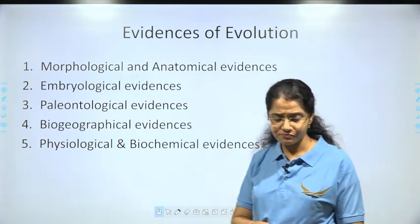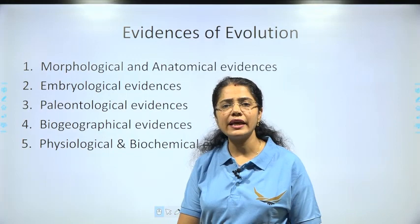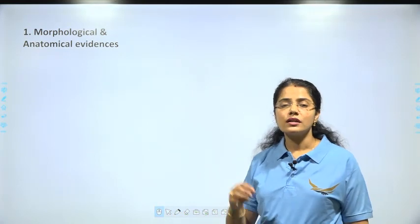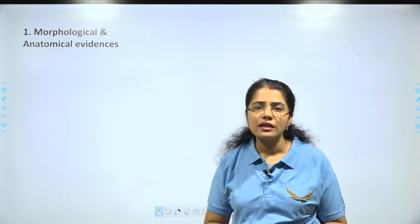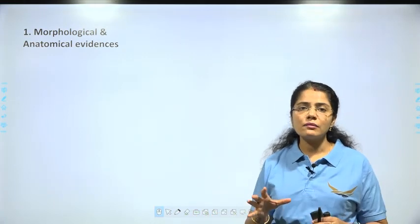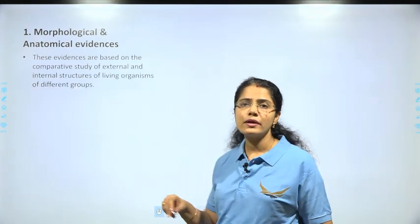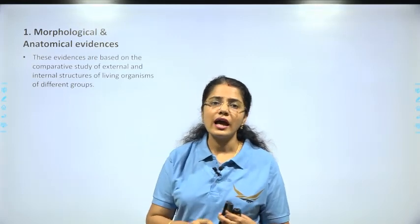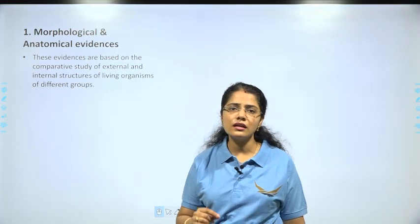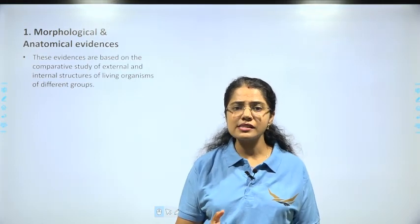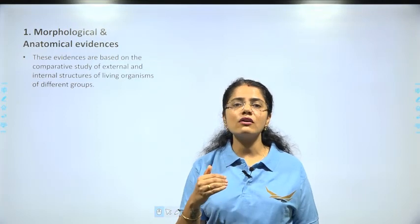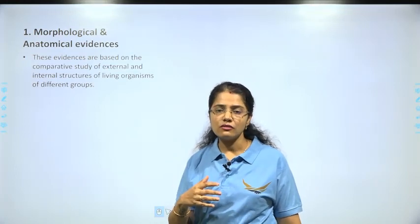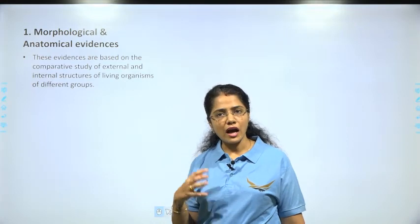We start with the first one: morphological and anatomical evidence. Morphological and anatomical evidence is based on the comparative study of external and internal structures. Morphological means external; anatomical means internal. This is based on the structures of living organisms of different groups, and from that we can understand structural similarities and how they must have evolved.